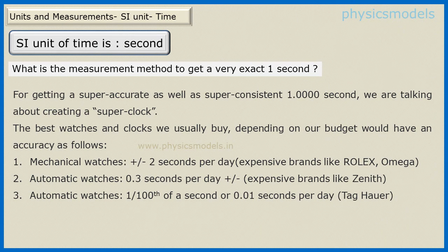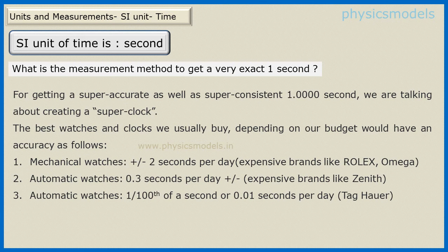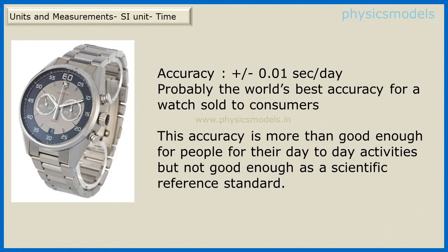The SI unit of time is second. The more challenging question is what is an exact one second — meaning something like 1.0000 seconds — and the moment we talk about that kind of accuracy, we are talking about a super clock. The best watches can be divided into mechanical and automatic categories. Mechanical will have plus or minus two seconds per day, while the best automatic watch will give you 0.01 seconds per day accuracy, so at the end of the day you'll be off by only plus or minus 0.01 seconds.